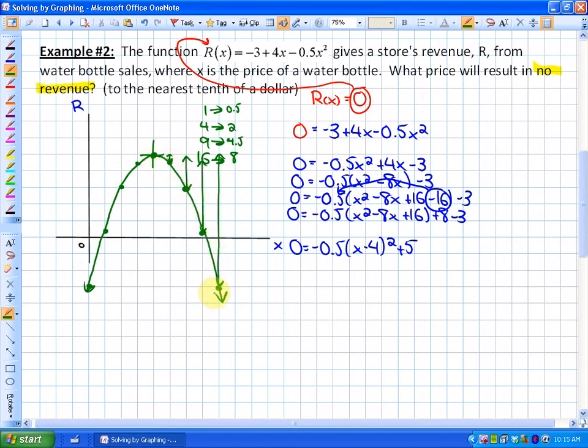This gets me to what one of the disadvantages of solving by graphing is. One of the disadvantages is that we can't get exact values unless it's a whole number crossing the x-axis. In this particular case, it says answer to the nearest tenth of a dollar. So what price or what value of x will make the revenue equal zero? So I would estimate that these two points here might be roughly $0.80 and maybe $7.20, but that is just an estimate, a disadvantage of this particular problem.